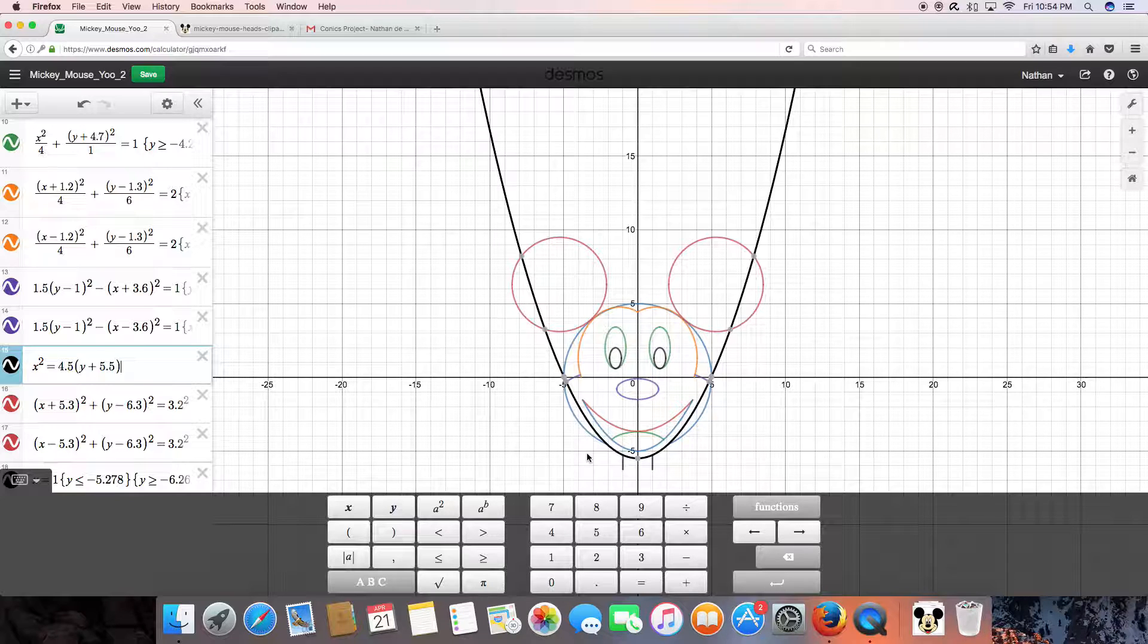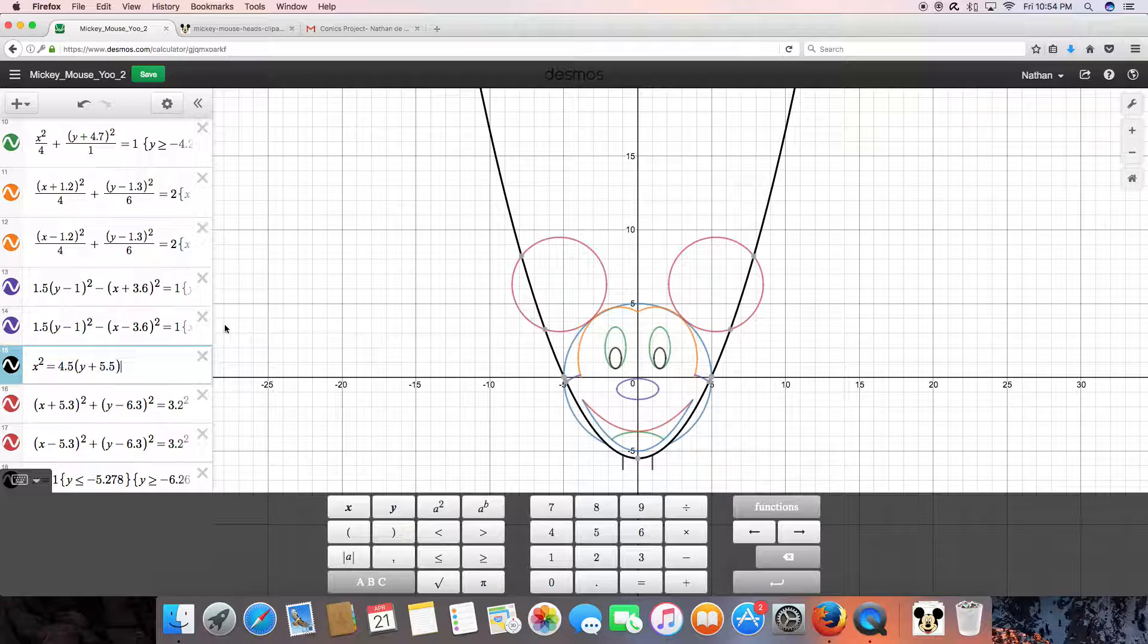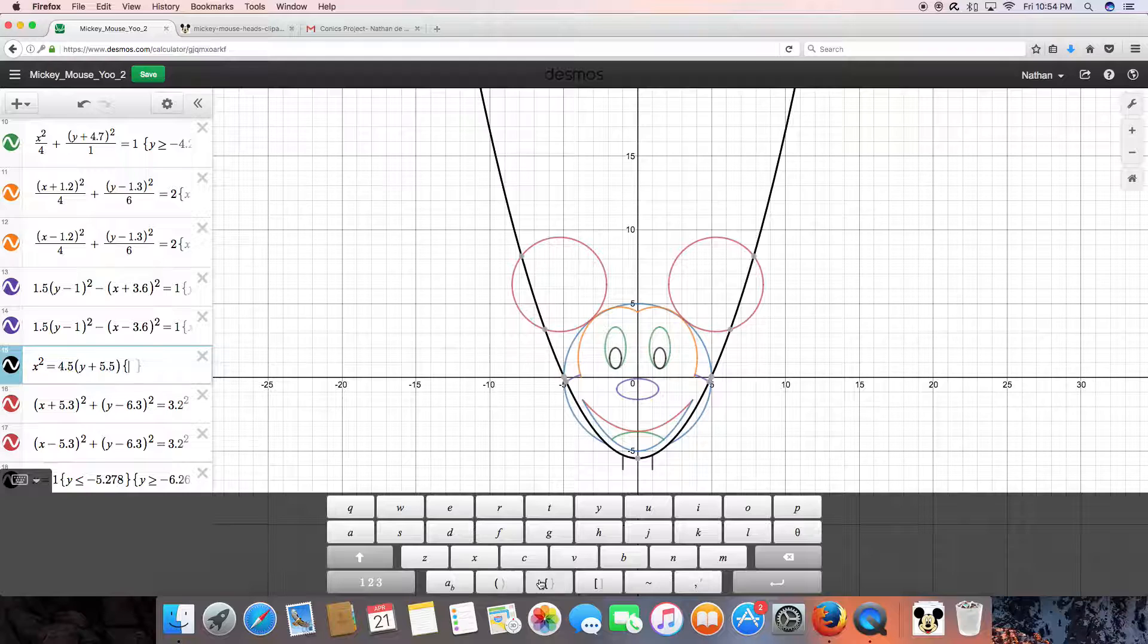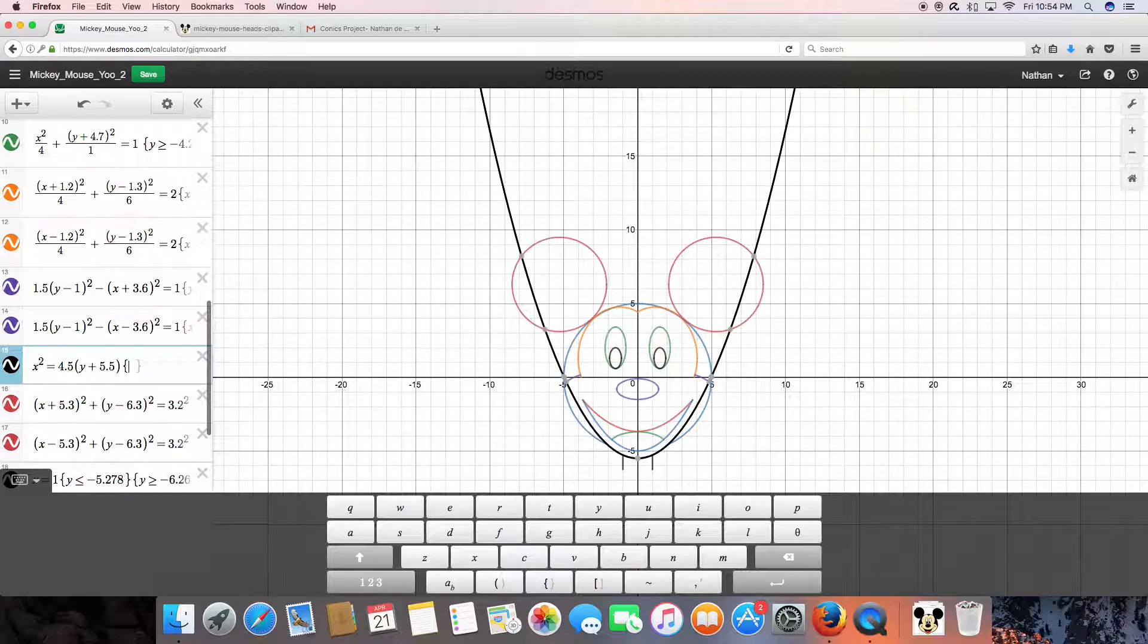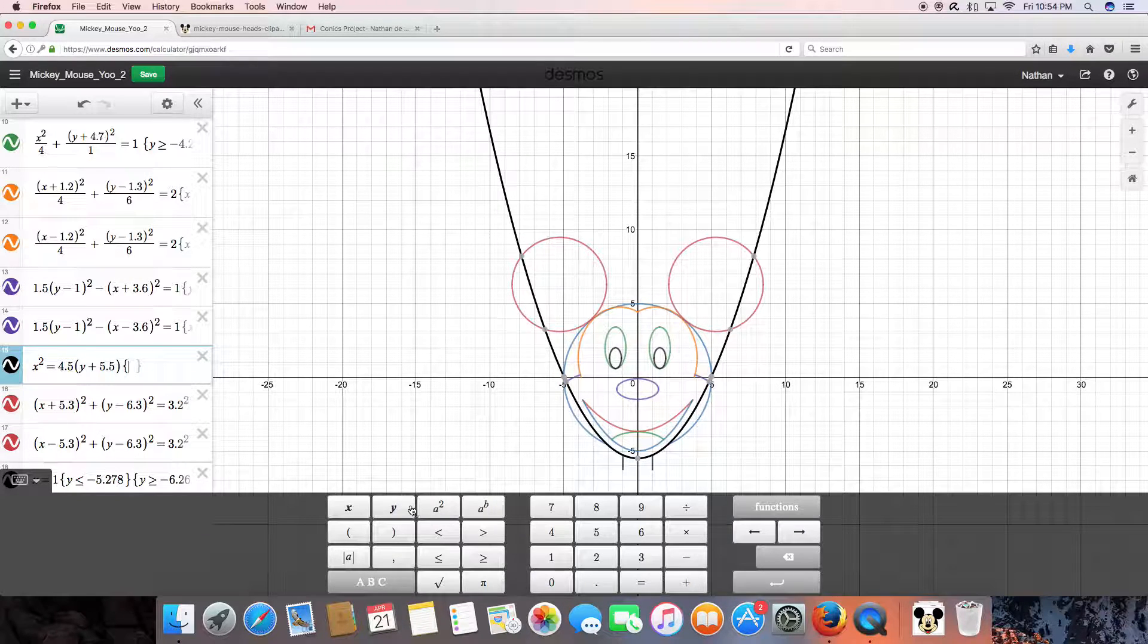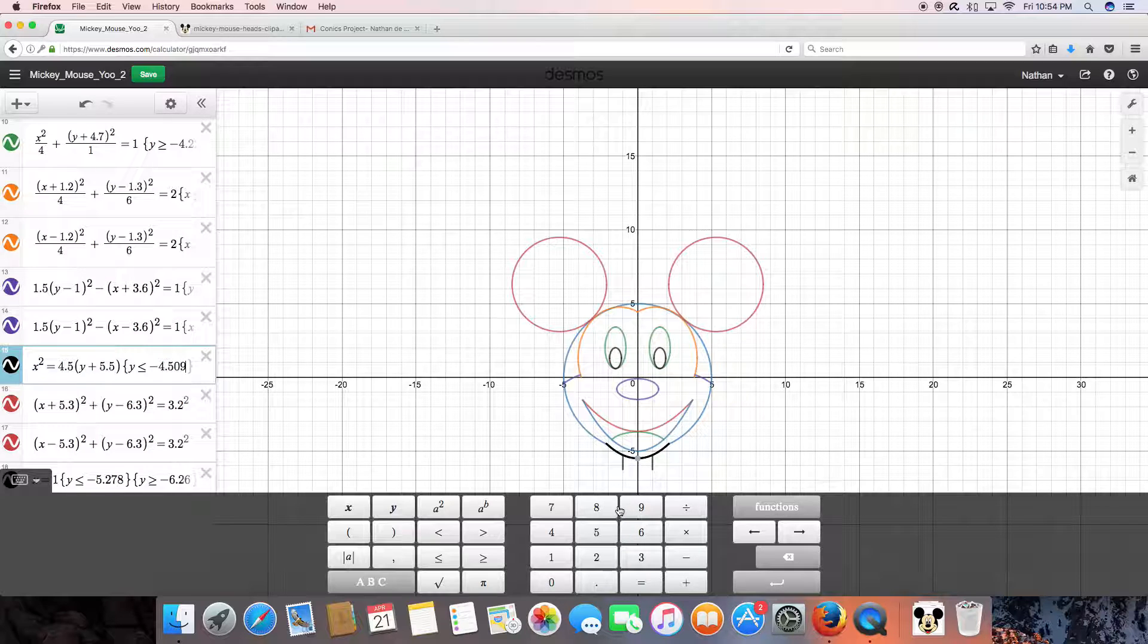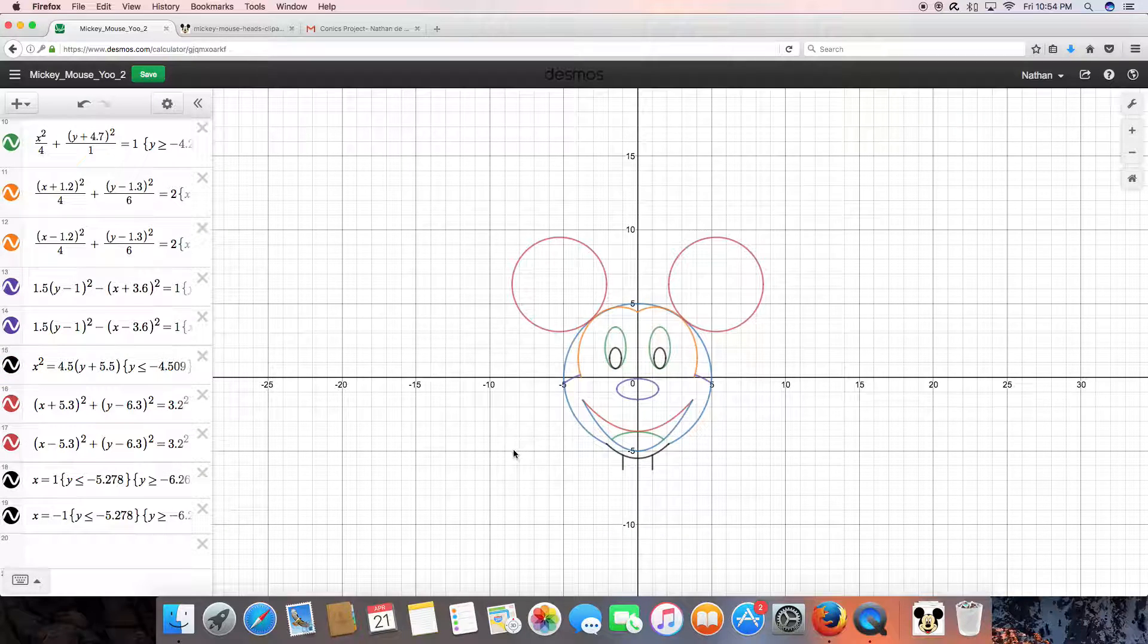Now here's our parabola but there's one problem it conflicts with our image. Now in order for the parabola look more like a chin and less like a parabola we must add a restriction and the restriction I used was y is less than or equal to negative 4.509 and there you have it Mickey Mouse.